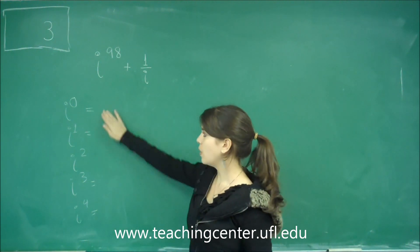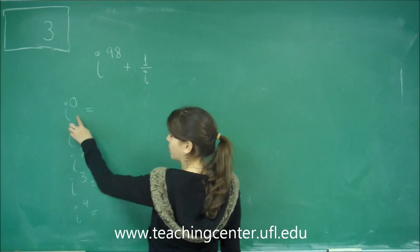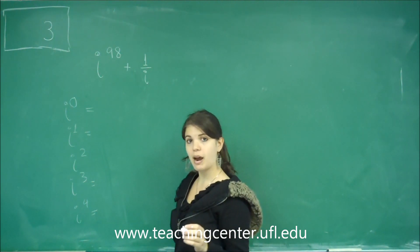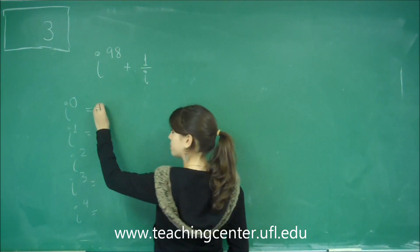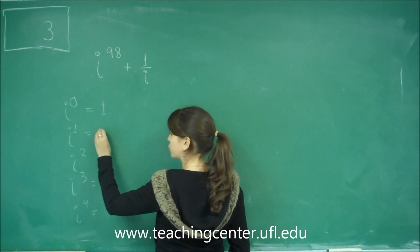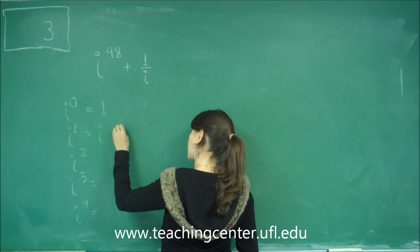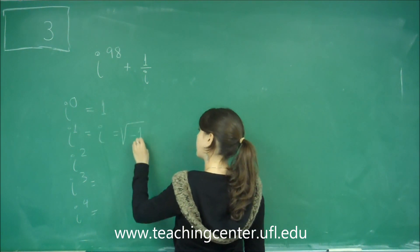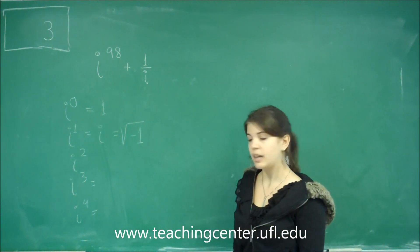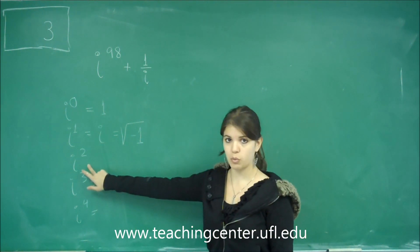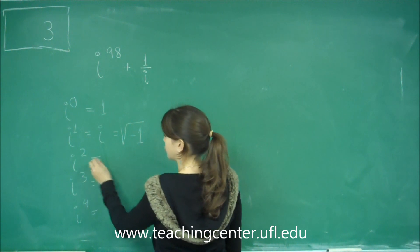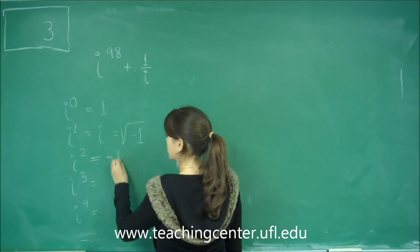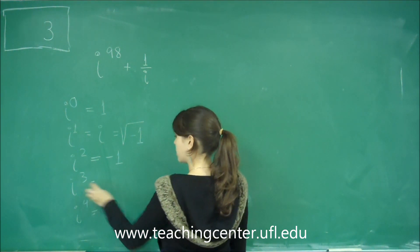Let's go first through what these values are. i to the 0 is like any number to the 0 power, which is 1. i to the 1st is just i, and also the definition of i is the square root of negative 1. And that's going to give us i squared. So squaring this, we get just negative 1.